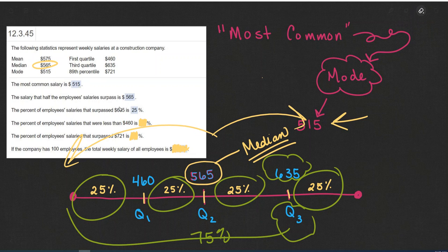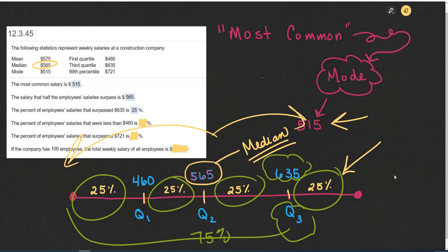Oh, I'm sorry, I'm reading that wrong. It's the salaries that surpass the $635, so that is this 25% that we started with. So 25% surpasses the $635 mark.